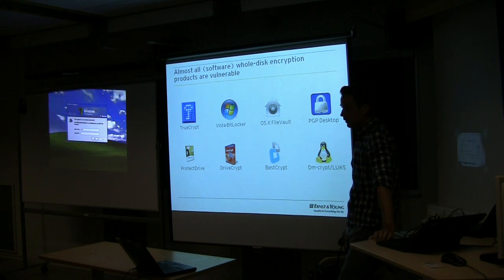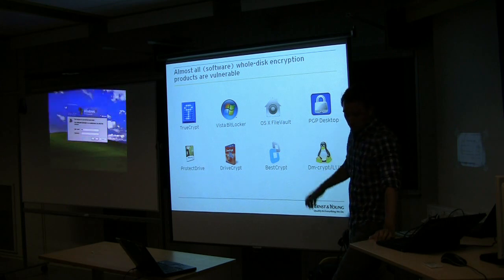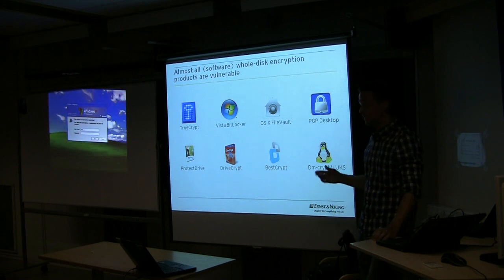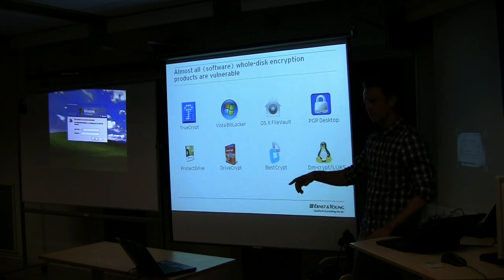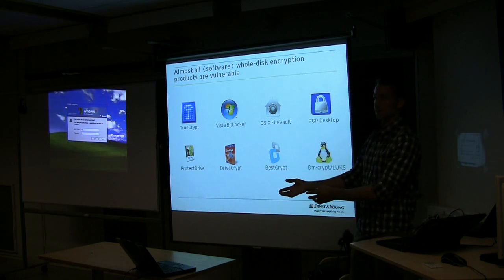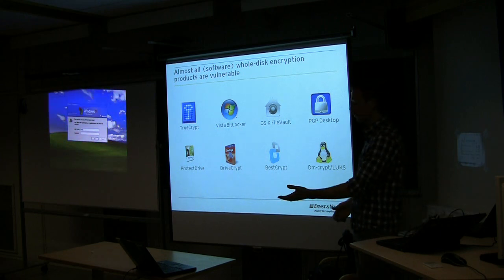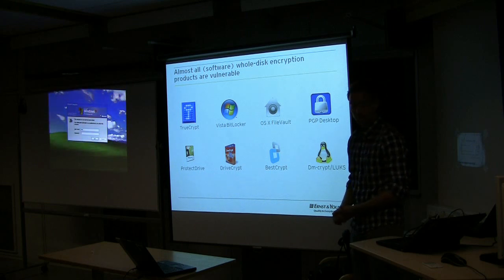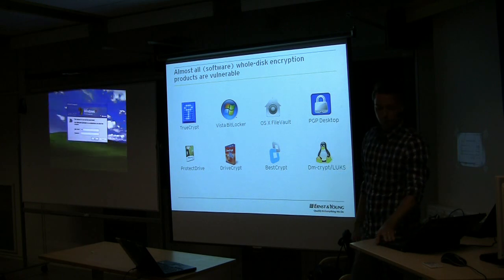I wrote a program that analyzes the memory dump because you need to analyze it after extraction. I basically created a program that can search for AES, Twofish, and Serpent keys, and I've tested it on many systems — usually all full disk encryption systems are vulnerable to this attack. The Princeton guys actually fully automated this so you can just hit enter, reboot the machine, dump the memory, analyze it, and unlock the disk on the fly.